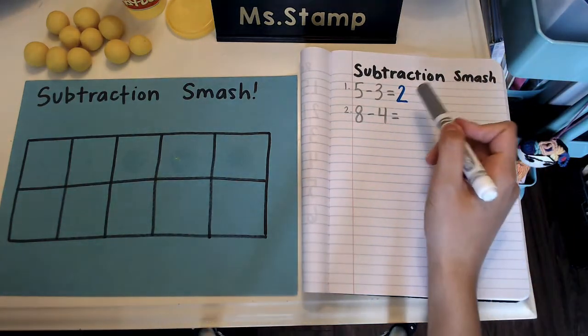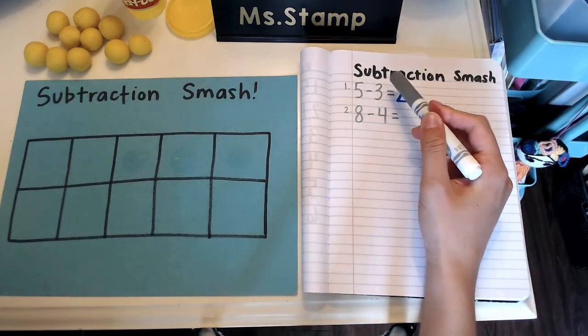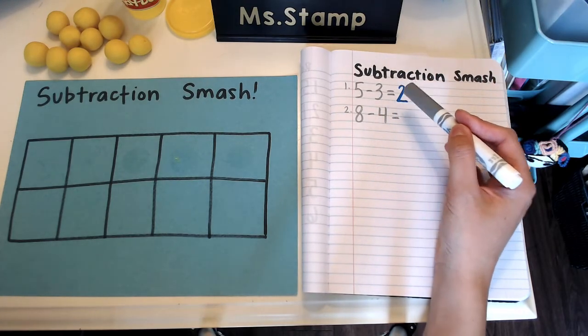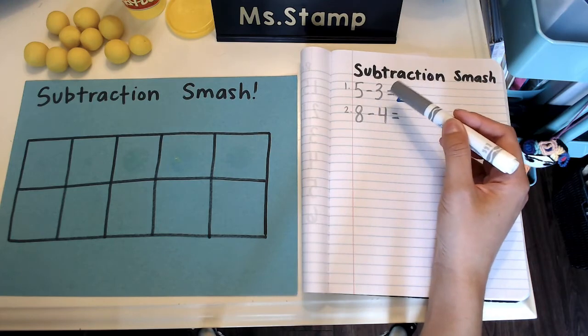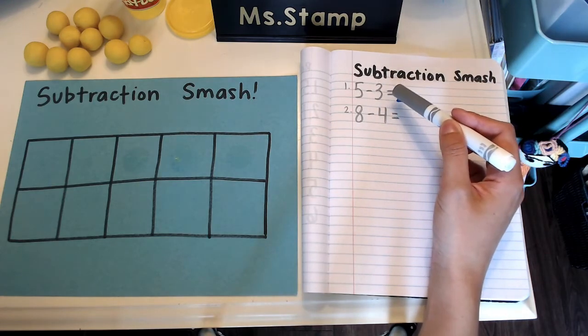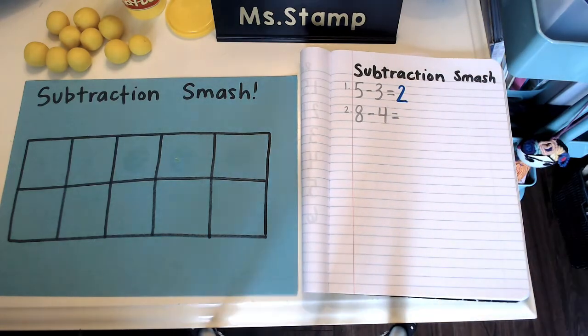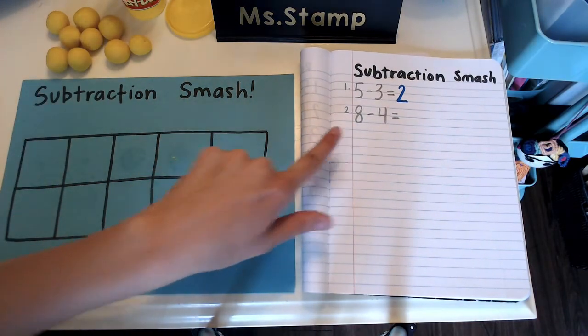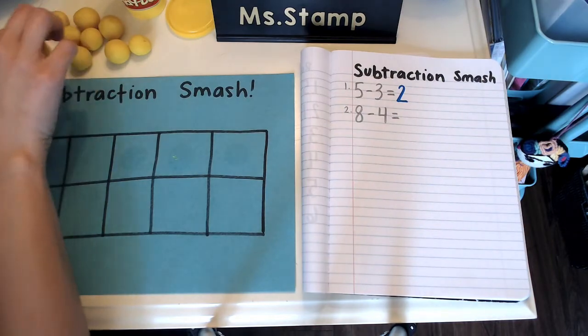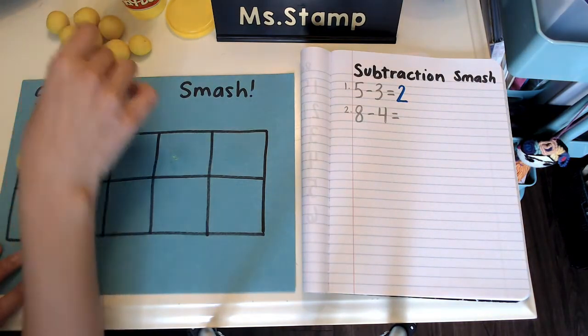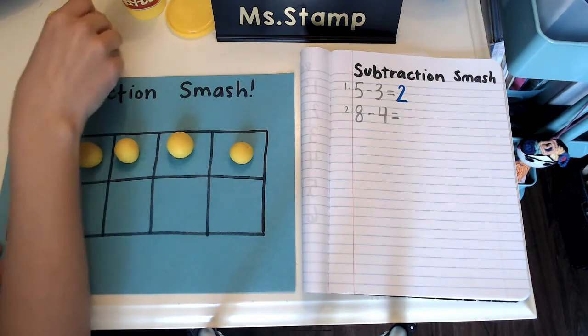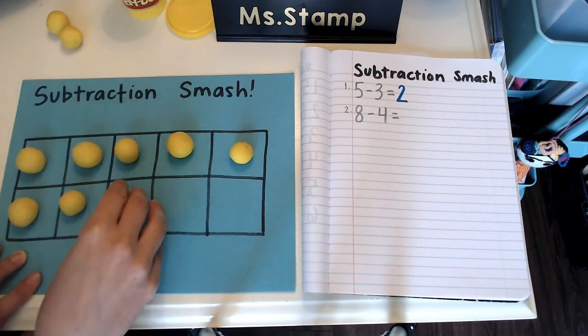Don't forget your equal sign. Sometimes you guys just put your answer without your equal sign. So don't forget your equal sign. All right, let's do eight minus four. So I'm going to start with the number eight, eight balls of play-doh on my ten frame: one, two, three, four, five, six, seven, eight.